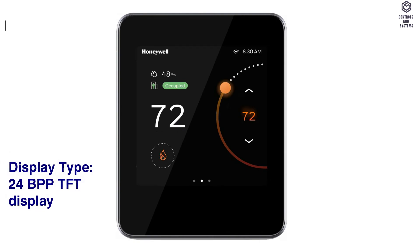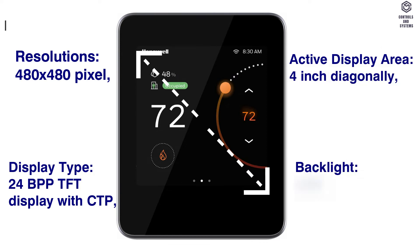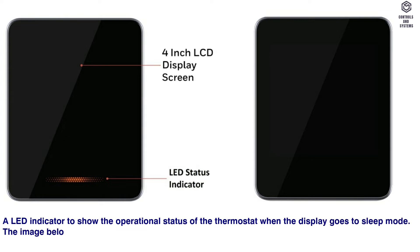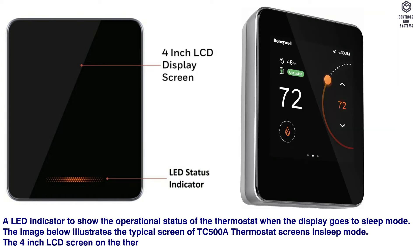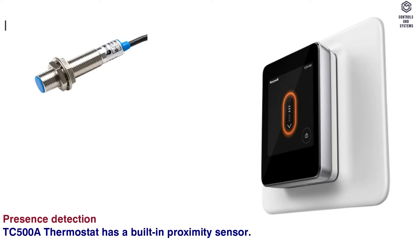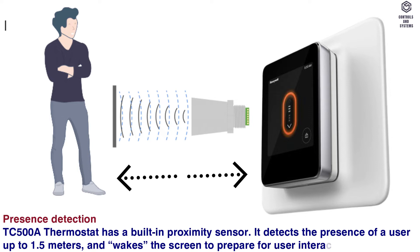Thermostat Display Overview: Display type is a 24 BPP TFT display with CTP. Resolution is 480x480 pixels. Active display area is 4 inches diagonally. Backlight is LCD, dimmable. A LED indicator shows the operational status of the thermostat when the display goes to sleep mode. The 4-inch LCD screen on the thermostat is touch sensitive and shows the status of the thermostat. The TC500A thermostat has a built-in proximity sensor that detects the presence of a user up to 1.5 meters and wakes the screen to prepare for user interaction.